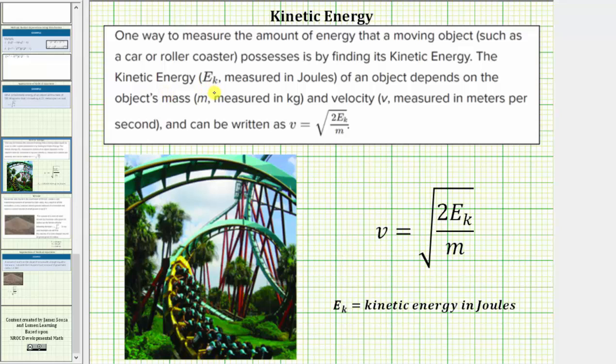The kinetic energy E sub k measured in joules of an object depends on the object's mass m measured in kilograms and the velocity v measured in meters per second and can be written as the equation v equals the square root of the quantity two times E sub k divided by m.